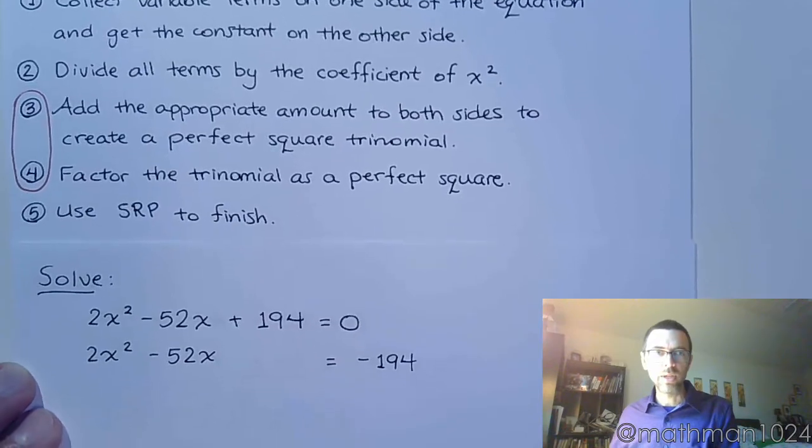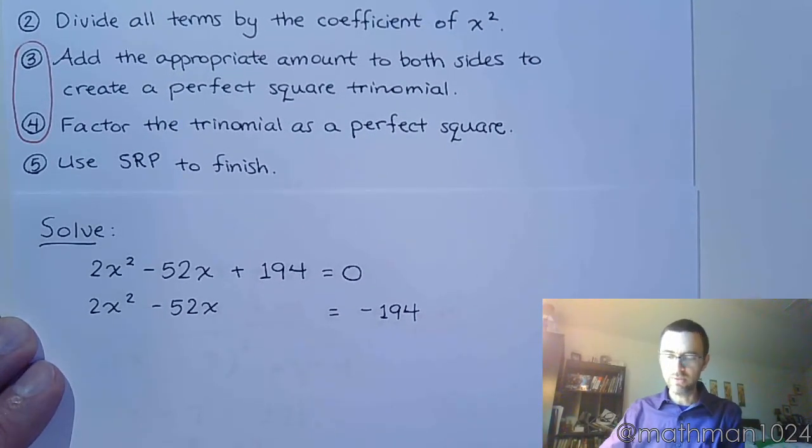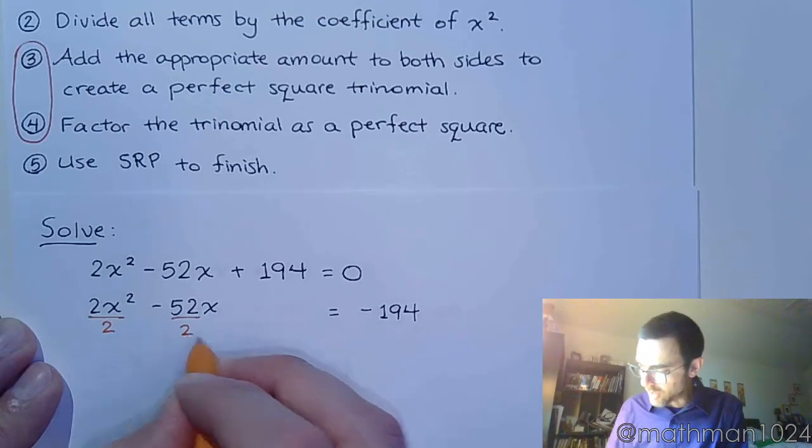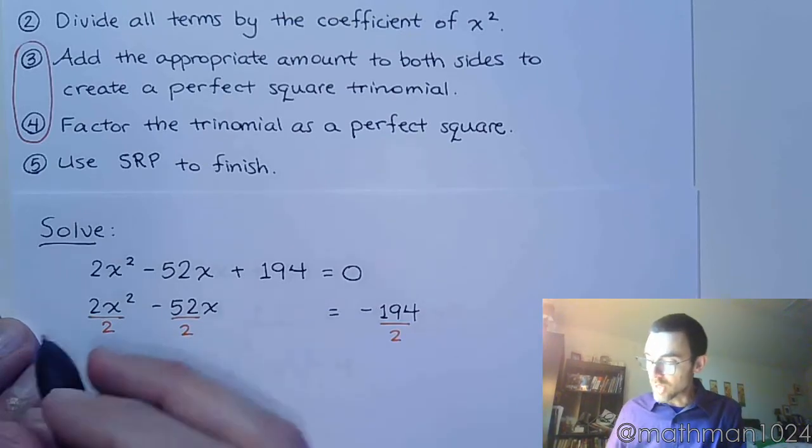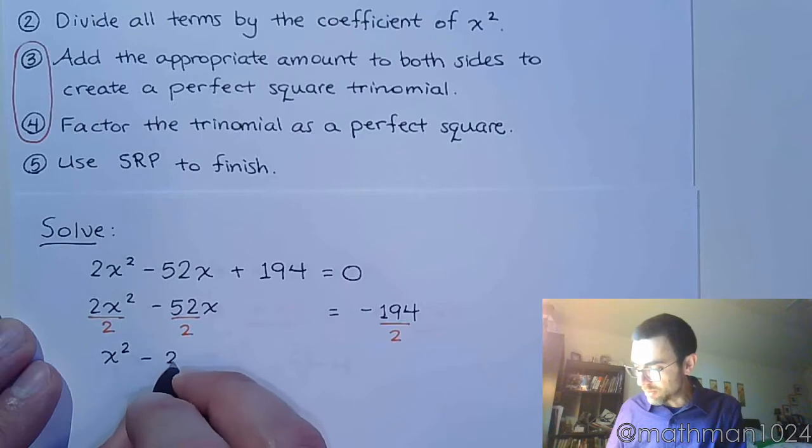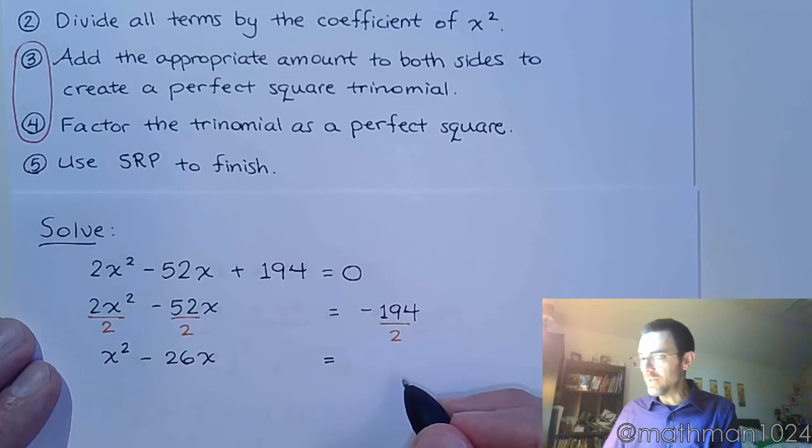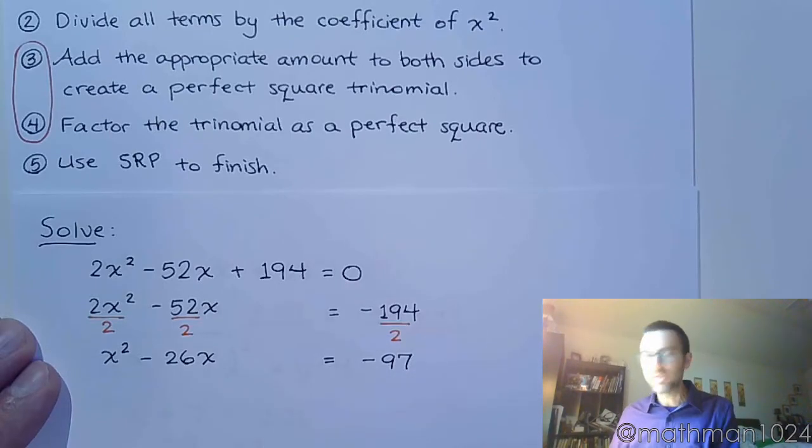So, that's step 1. Step 2 is to divide all terms by the coefficient of x squared. So, that means I need this guy to be a 1. So, I'm dividing everything here by 2. We want this to now be a positive 1x squared. This is minus 26x equals half of negative 194 is negative 97.